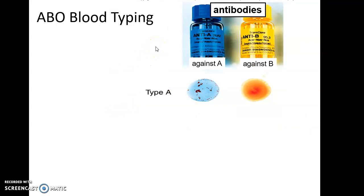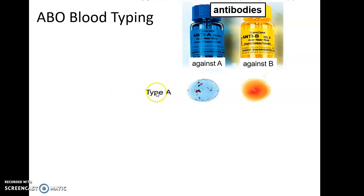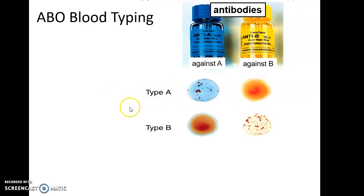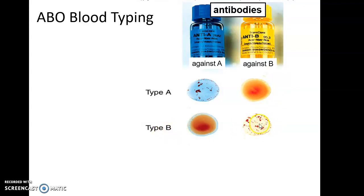When someone is being tested for their blood type, you take a sample of their blood and expose it to antibodies against one antigen — antibodies against antigen A and antibodies against antigen B. If you see a reaction where it gets all clotted up, then you know you have that antigen present. Someone with type A blood has antigen A present, so if you expose their blood to anti-A antibodies it gets agglutinated. But exposing type A blood to anti-B antibodies — nothing will happen. If they're type B, exposing their blood to anti-A antibodies nothing will happen, but exposing type B blood to anti-B antibodies will cause agglutination.